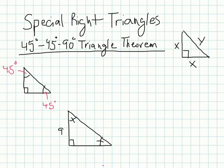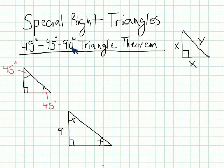Welcome to Geometry 4-2. We're learning about special right triangles, and specifically we're starting off with a 45-45-90 triangle in this theorem. Before we even get into this, I just want to look at how these are derived. We're going to use the Pythagorean theorem to get to how we're kind of coming up with these shortcuts for these special right triangles.